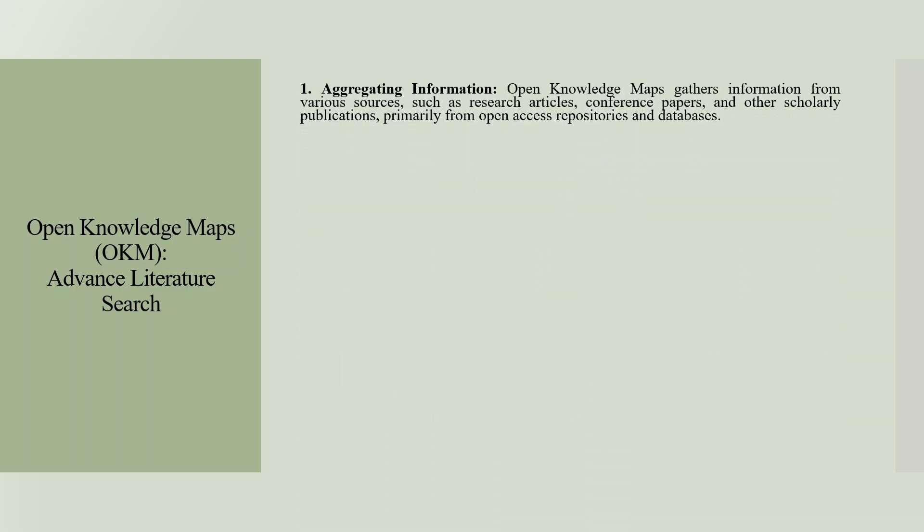Open knowledge maps are used for advanced literature search. Open knowledge maps gather information from various sources such as research articles, conference papers and other scholarly publications, primarily from open access repositories and databases.